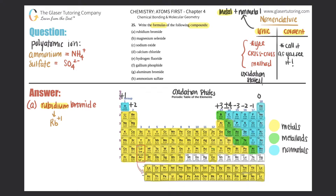Bromine, or bromide, comes from bromine which is a -1, so Br is -1. Now use the charges to crisscross: the +1 crisscrosses down telling me I only need one bromine, and the -1 crisscrosses down telling me I only need one rubidium. When you crisscross, you forget about the positives and negatives — you only look at the absolute number. It's a 1-to-1 ratio, so the compound is RbBr.